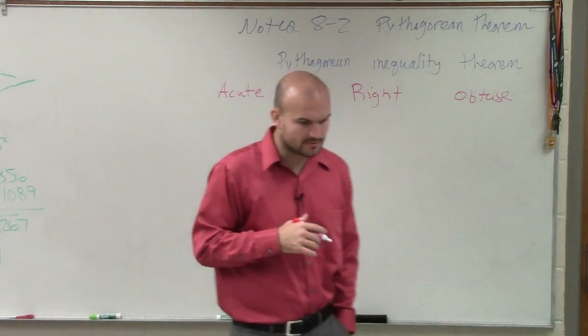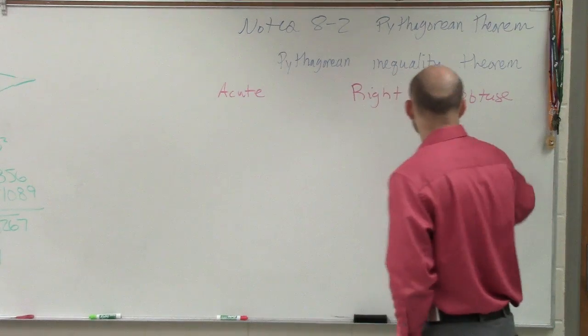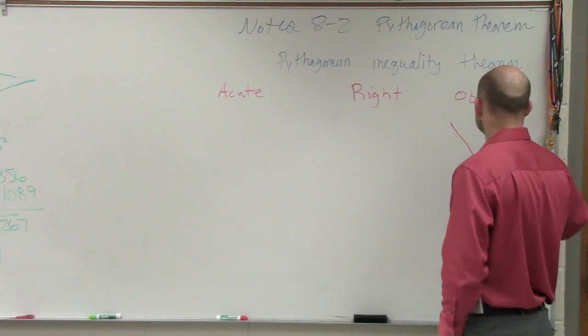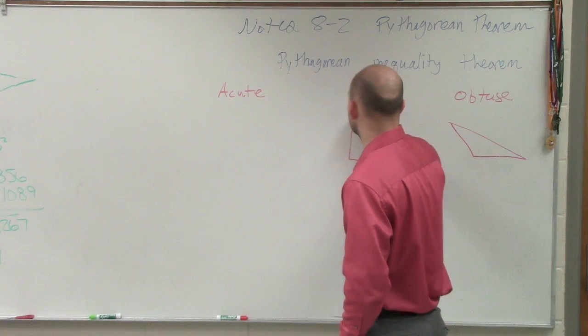An obtuse triangle is going to obtain an obtuse angle. A right triangle is going to obtain a right angle.